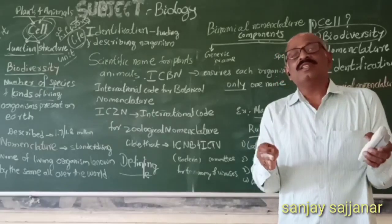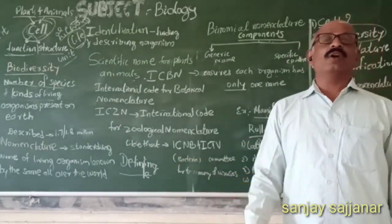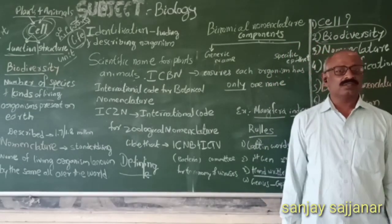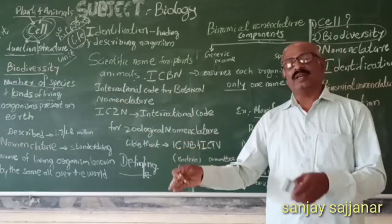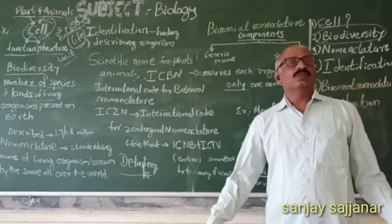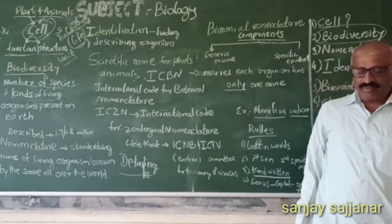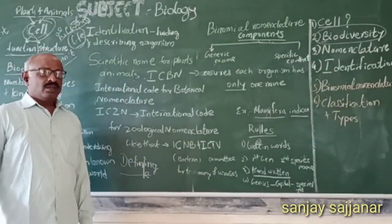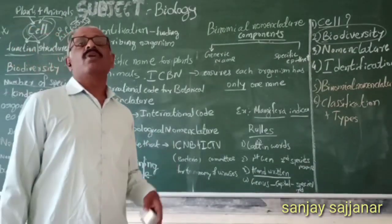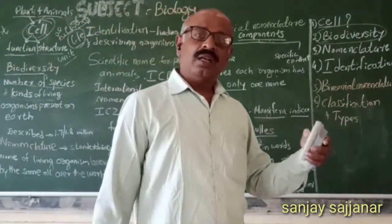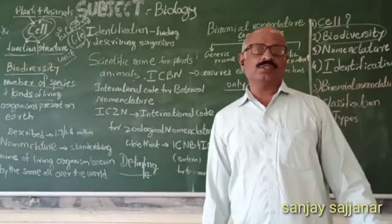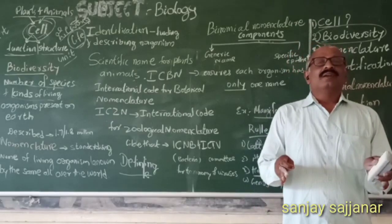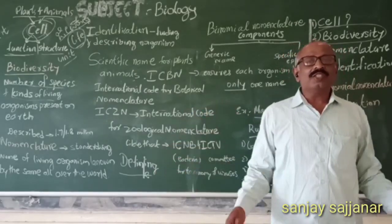Biodiversity is not the same everywhere; it is always different from place to place, from continent to continent. One kind of living organism we get in one area may differ from other kinds found elsewhere. The biodiversity of one area is totally different from the biodiversity of another area, such as a low-wave or coastal area.